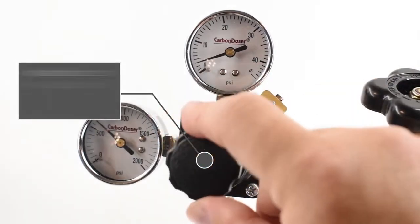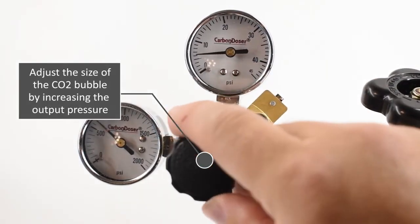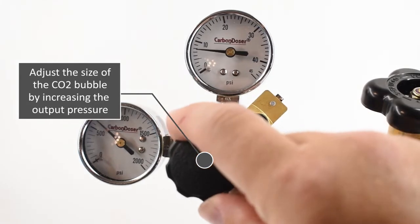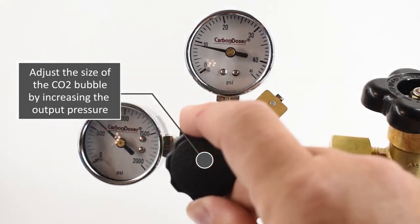The size of the CO2 bubble is adjusted by the output pressure on the regulator. Turn the knob clockwise until the desired pressure is set.